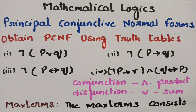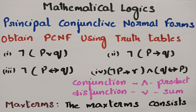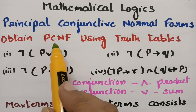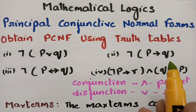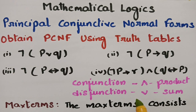I feel that fortune favors you all today and this video is going to push you forward in solving the problem. If you watch this video right till the end, things are going to get easier for you. Today's topic is Principal Conjunctive Normal Forms (PCNF), from mathematical logic — related to MFCS, DMS, and DMGD. We are going to obtain the PCNF using truth tables. These are important questions taken from previous question papers.